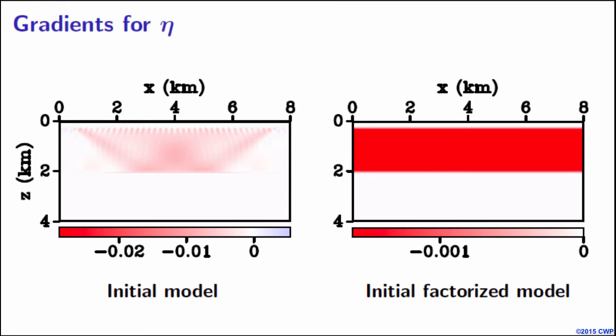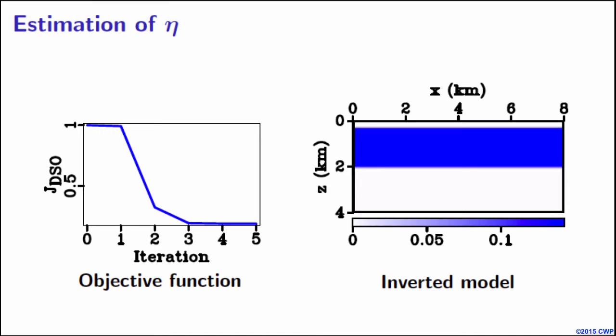What happens is eta inversion converges quite quickly. In three iterations the objective function flattens, and the inverted value of eta is equal to 0.144, which is very close to the actual value. Probably because we have a lot of shots and nice offset to depth variation, we can constrain this.